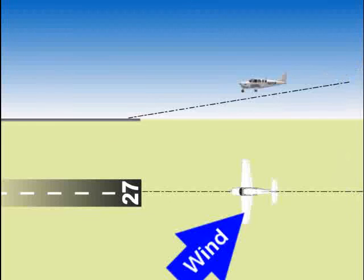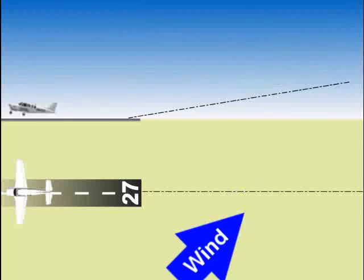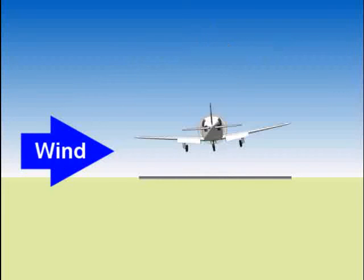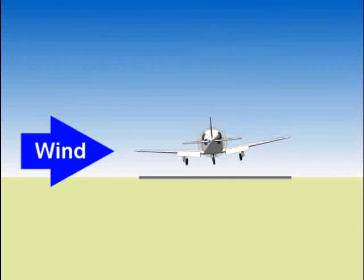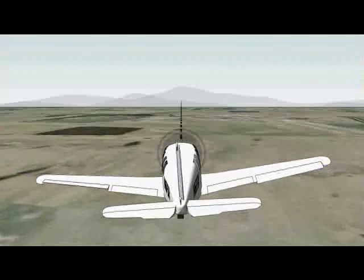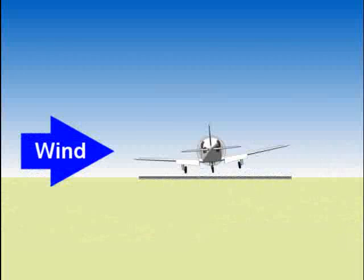The transition from approach glide to slow flight over the runway. Use the elevator much like you do the brake in your car as you approach a stop sign. The closer you get to the runway, the slower you descend toward it.